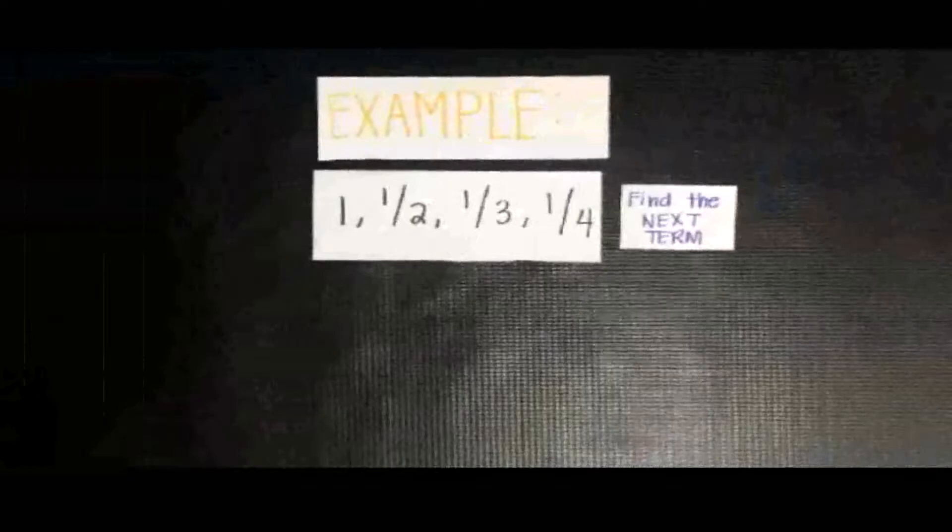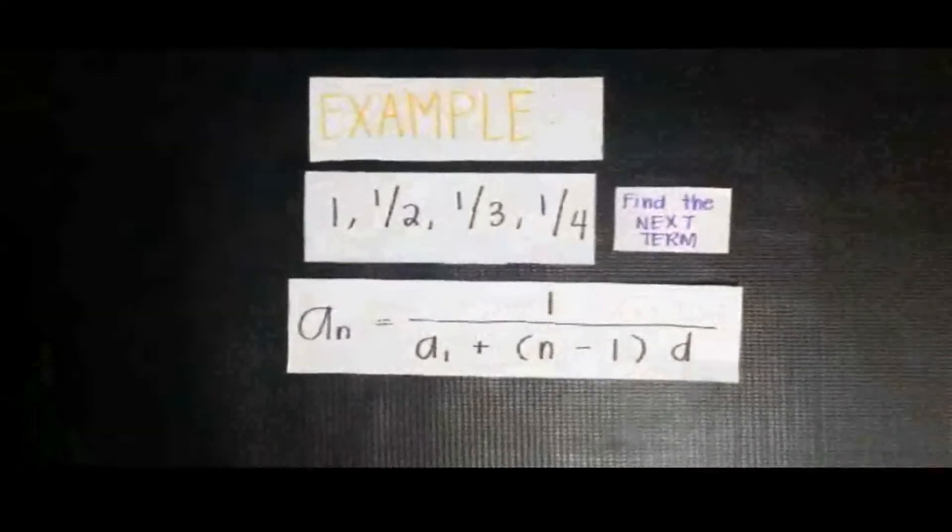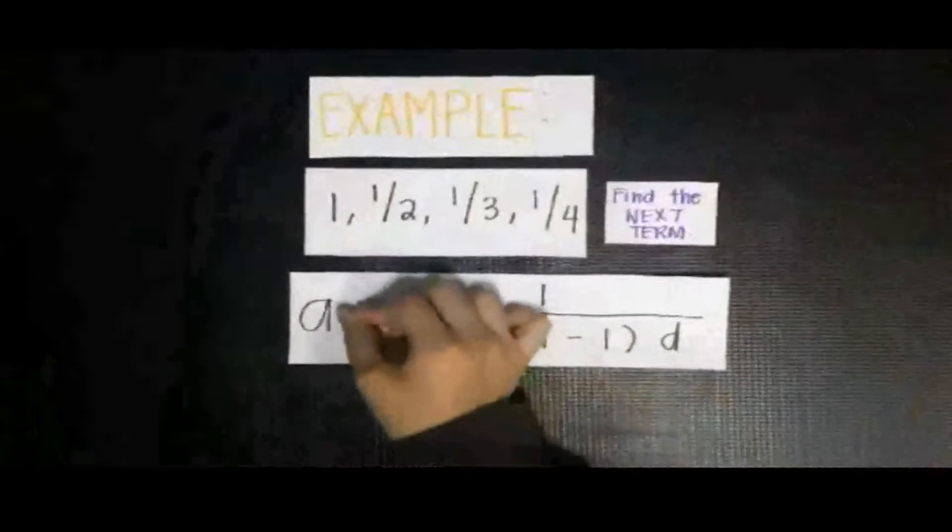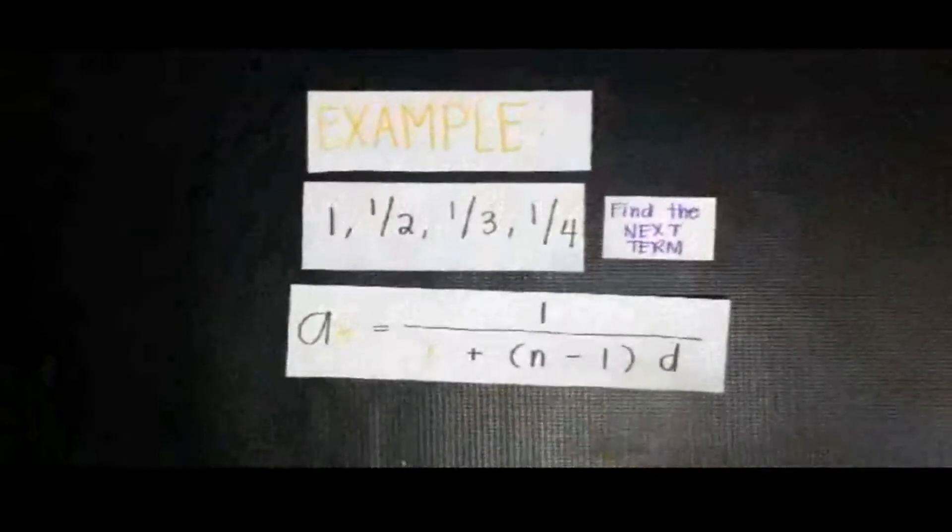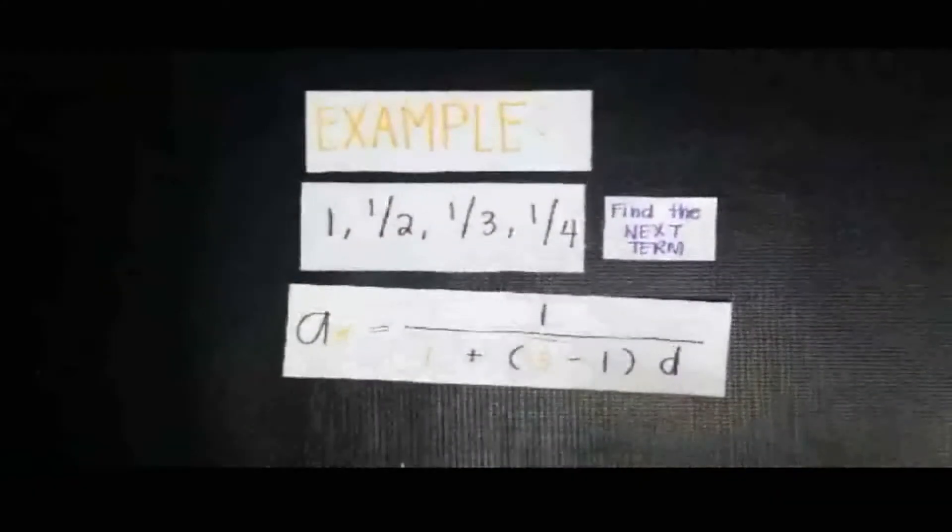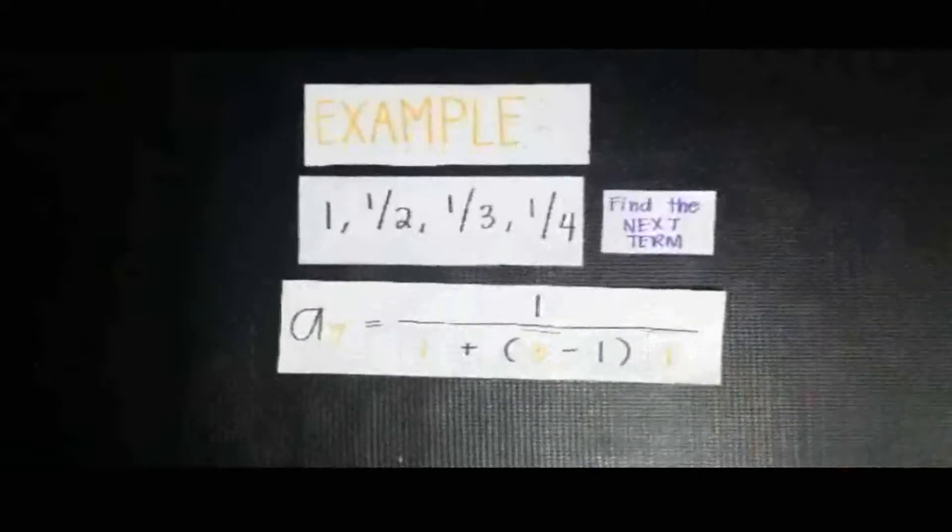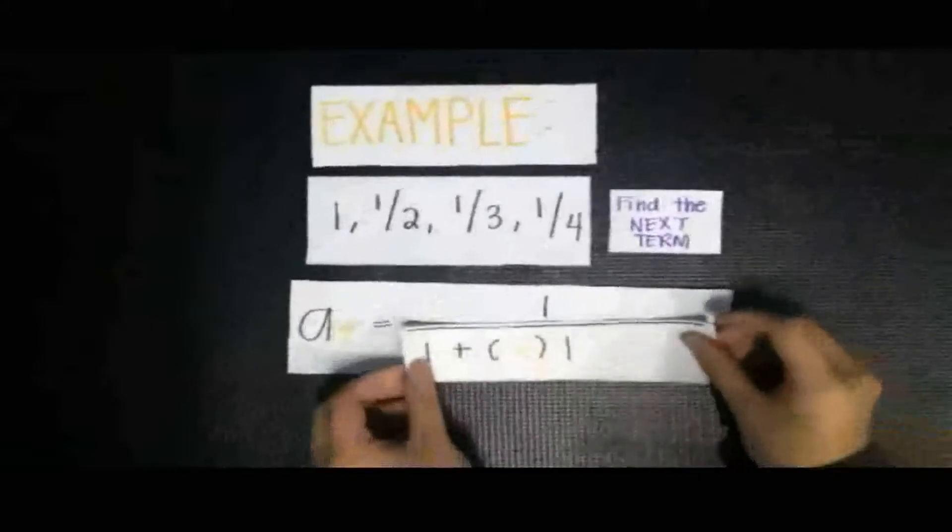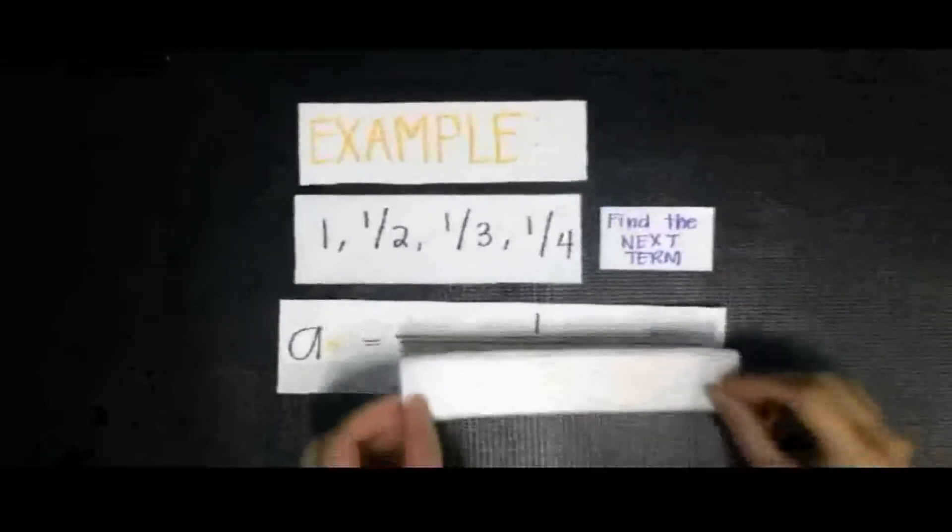Now, here is the formula. a_n will become a_5 since we are looking for the fifth term. a_1 will become 1, n will become 5, and d will become 1. Here it is: it will turn into 1 plus the quantity of 4 and 1. So a_5 is equal to 1 over 5.